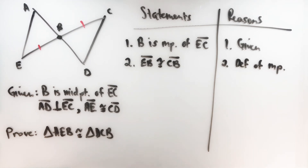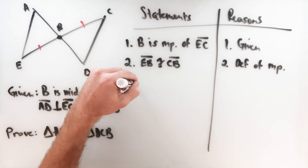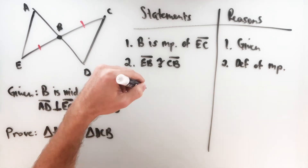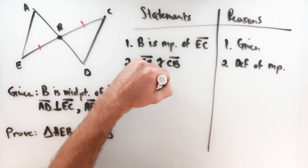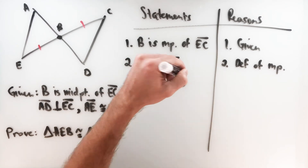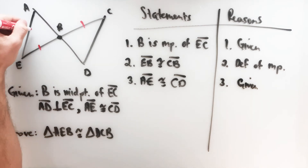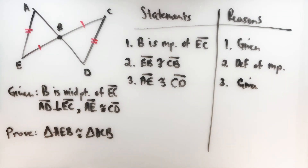Just looking at the picture, that's going to be a pair of legs — we don't have right angles yet, we'll get there. Next, from the given information: segment AE is congruent to segment CD. Those sides will in fact be the hypotenuses of the two triangles. So we've already got two pairs of sides; we just need to establish that these are right triangles.